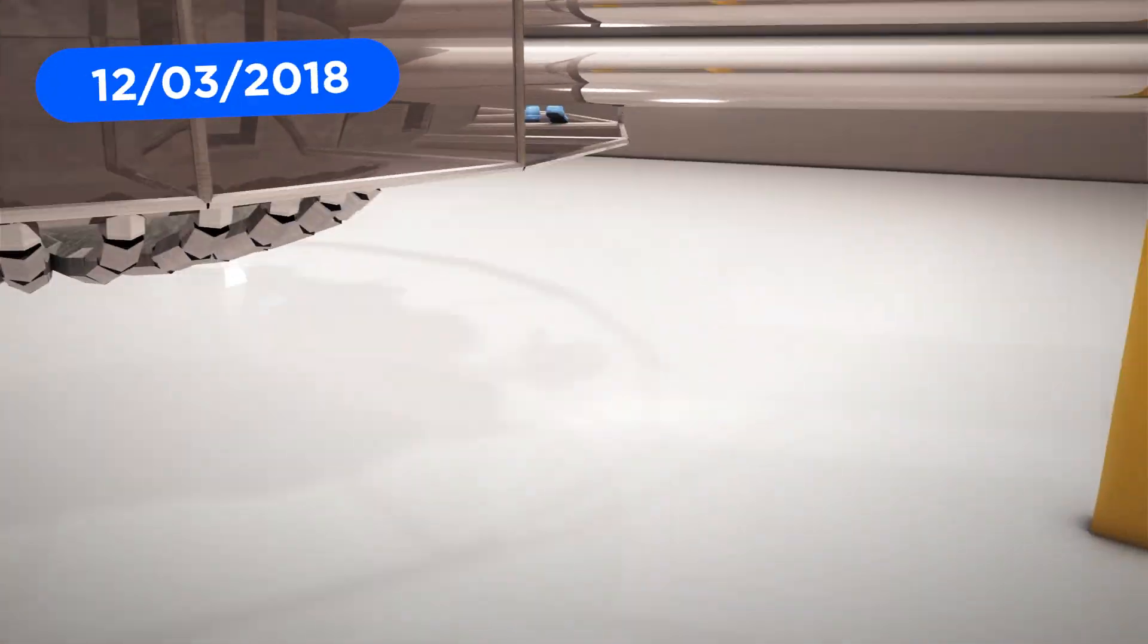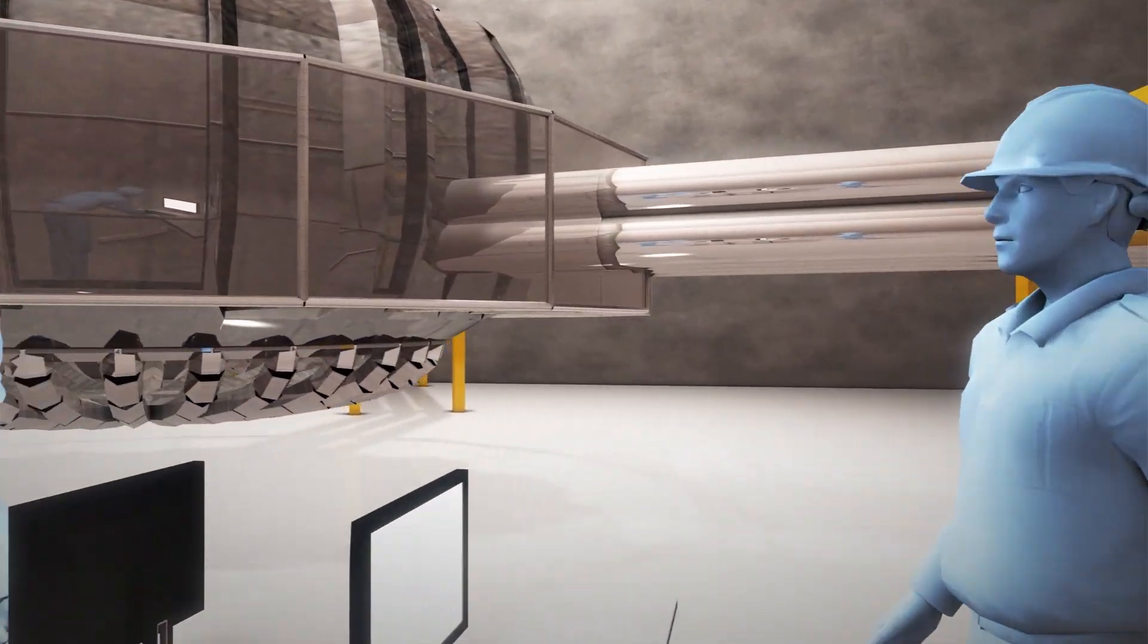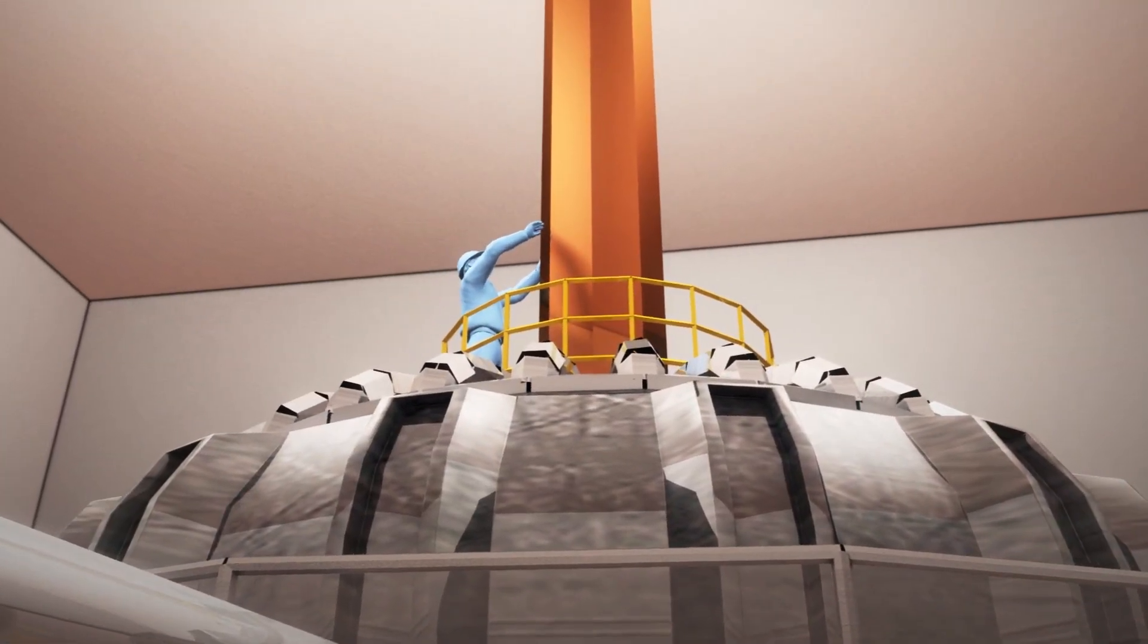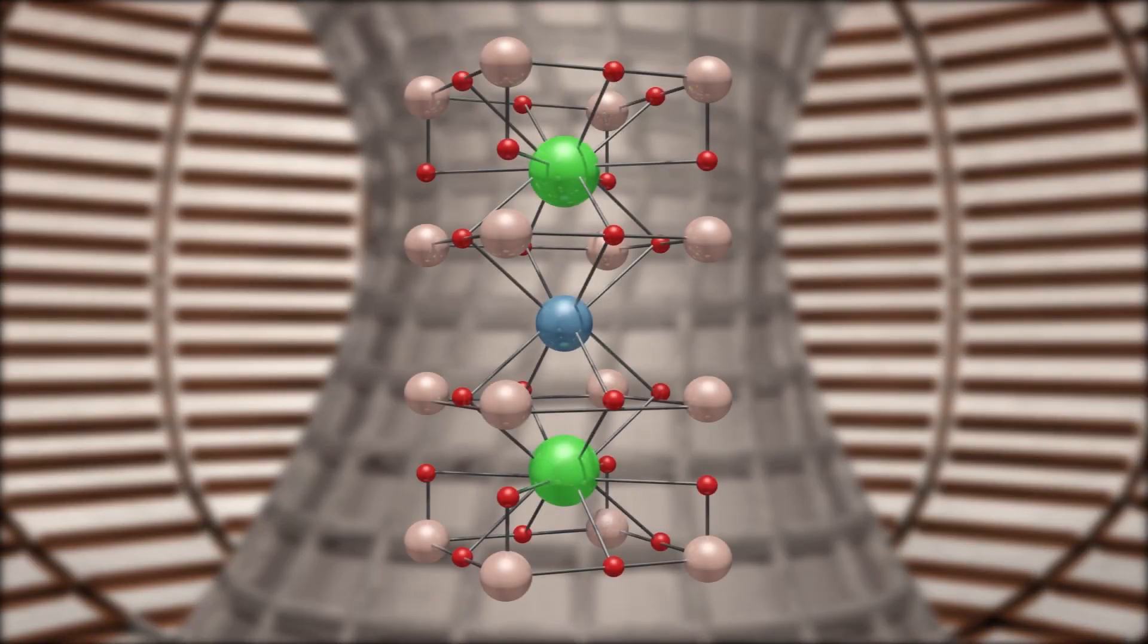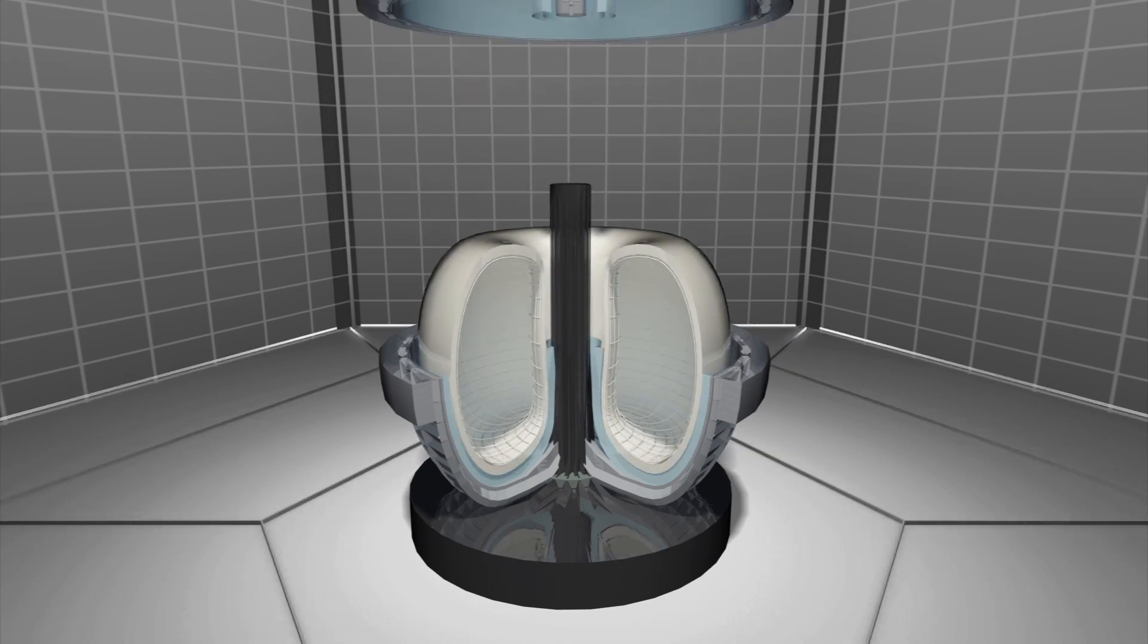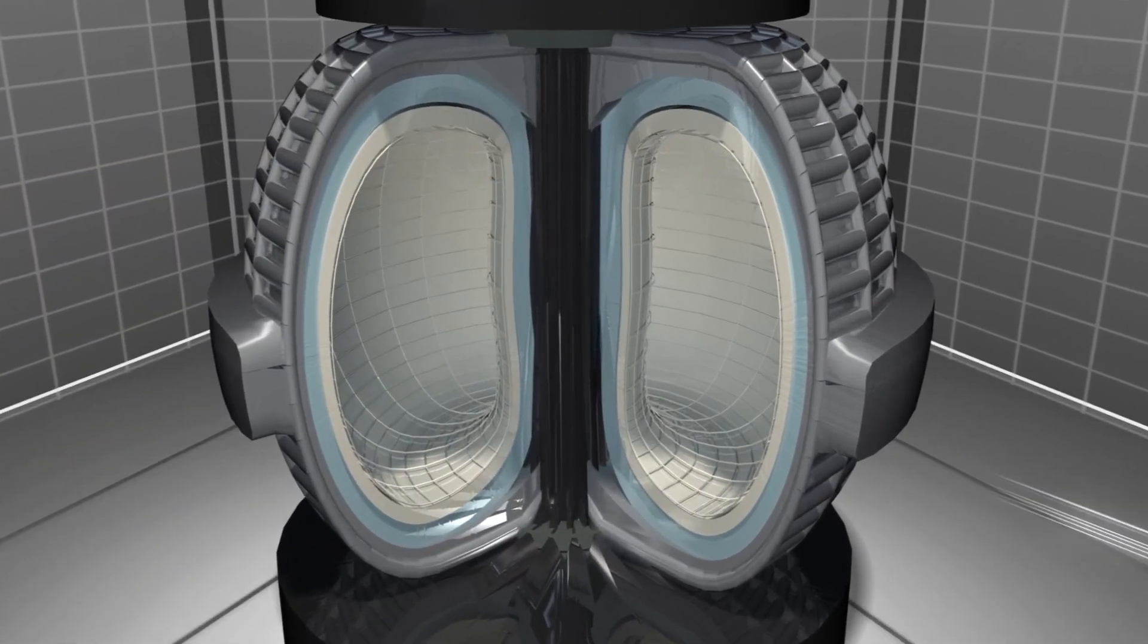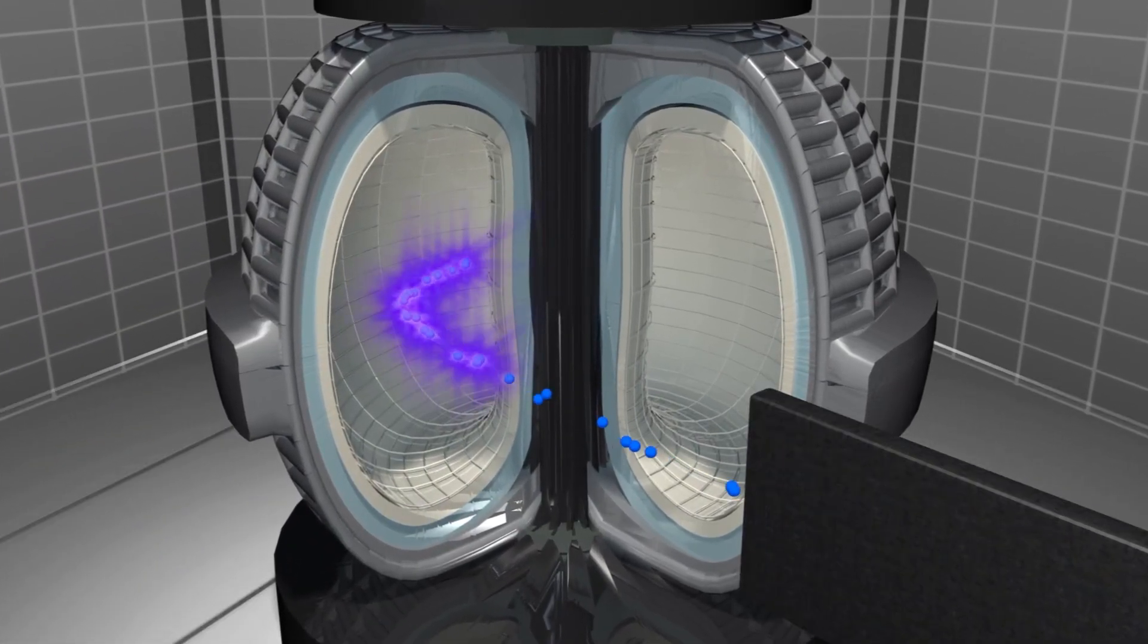Researchers at the Massachusetts Institute of Technology working with a newly formed private company say they will build a working fusion power plant in 15 years thanks to a new superconducting material that recently became commercially available. The material is a new superconducting steel tape coated with yttrium and barium copper oxide. The team working with MIT spinoff Commonwealth Fusion Systems plans to use the tape to make smaller, more powerful magnets that can be used in fusion reactors. The new magnets will double the magnetic field of a fusion reactor, which means more power can be produced with a smaller device. The smaller size will reduce costs and complexity, making future fusion power plants easier to construct.